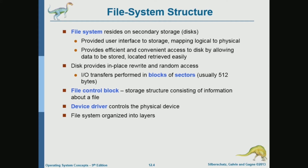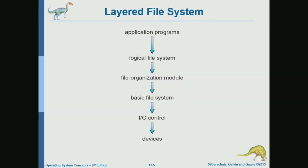In file system implementation, one of the important data structures is the file control block, which we'll see in more detail later. The file control block is a data structure that the file system keeps to store information about each file. The device driver is another important component — it's the part of the operating system that talks to and controls the hardware.